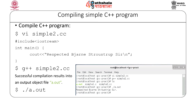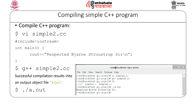Now let us see how to compile a simple C++ program. Open the VI editor and edit your simple2.cc file with hash include iostream, using namespace std if required, and a main function. Having understood the compilation process for C programs, let us now understand the compilation process for a simple C++ program. Open the VI editor, edit your program in the simple2.cc file, and then initiate the compilation process.